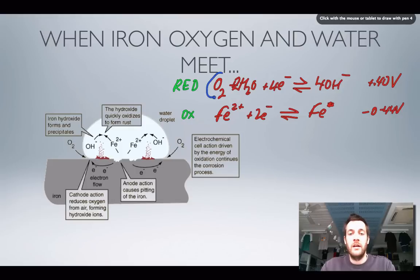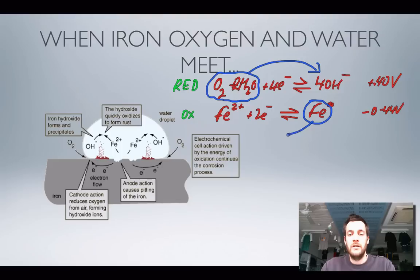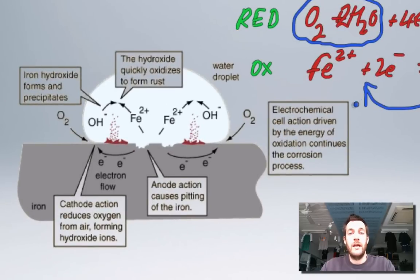We can see that this oxygen and water turning into hydroxide ions and these iron atoms turning into iron ions, because this is a clockwise loop, this must be a feasible reaction. So it's feasible for iron to react with oxygen and water, and in fact what we do when this happens is we basically set up an electrochemical cell.